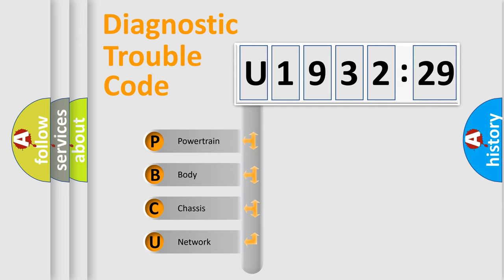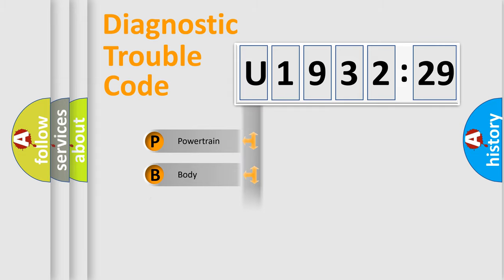We divide the electric system of automobile into four basic units: Powertrain, Body, Chassis, and Network.